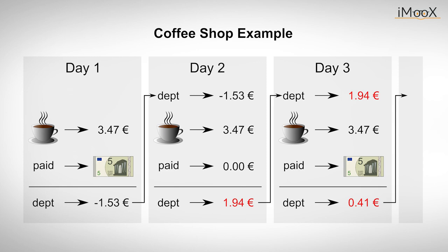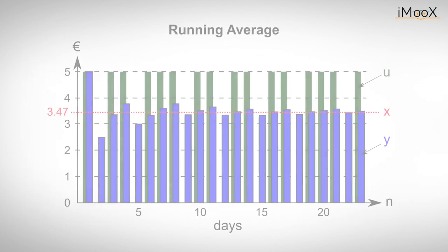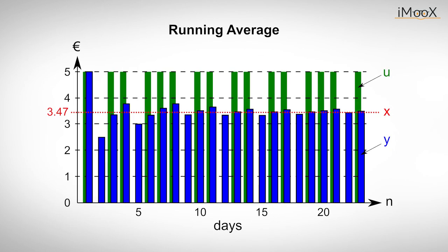What is actually happening can be seen in this diagram. In the figure, x represents the price of the coffee, u the money the engineer is giving which is either 0 or 5 euros, y is the average value the engineer pays for the coffee day by day, and n the number of days that have passed.